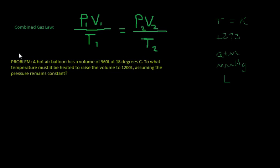Okay, let's read the problem. Problem reads: a hot air balloon has a volume of 960 liters at 18 degrees Celsius. To what temperature must it be heated to raise the volume to 1,200 liters, assuming the pressure remains constant? What I would like you to do is pause the video right now and just take a second and figure out what law we're talking about.